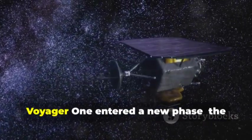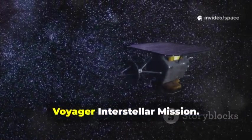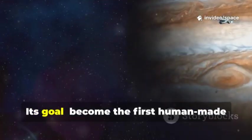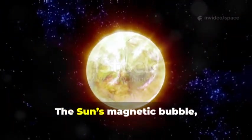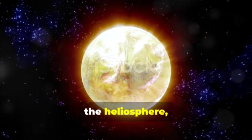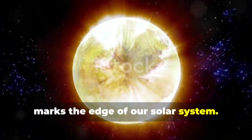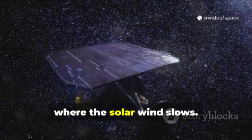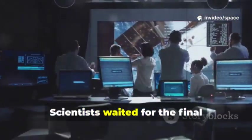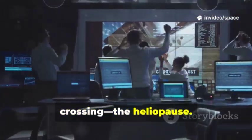After its final look back, Voyager 1 entered a new phase, the Voyager Interstellar Mission. Its goal: become the first human-made object to leave the solar system. The sun's magnetic bubble, the heliosphere, marks the edge of our solar system. In 2004, Voyager crossed the termination shock, where the solar wind slows. Scientists waited for the final crossing, the heliopause.